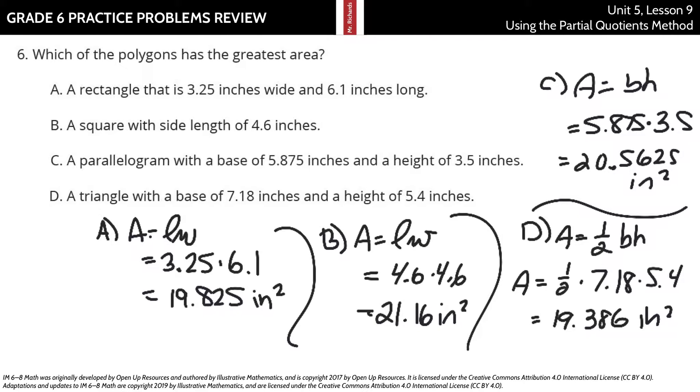Now, which of these appears to be bigger? That would happen to be B, a square with side length 4 and 6 tenths inches.